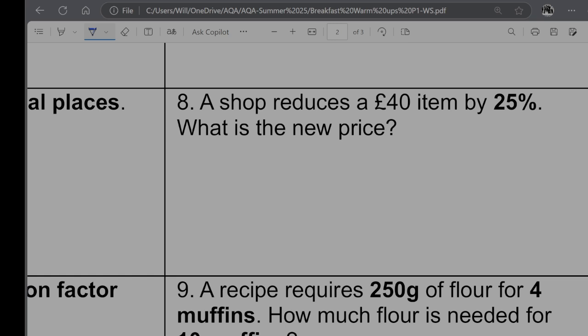Question 8, a shop reduces a £40 item by 25%. What is the new price? So I'm going to break this down exactly the same way as I did in the last question. So I'm going to say the full amount is £40. So 50%, half of it would be 20. So 25% is going to be equal to 10. So if I want 75% to reduce something by 25%, I want to do 40 take away 10, which is going to give me £30.